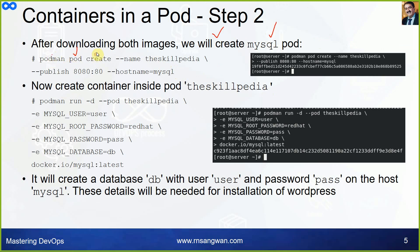After downloading both images, create a MySQL pod: `podman pod create --name the-skillpedia --publish 8080:80 --hostname mysql`. The `--publish` or `-p` flag means any request coming on port 8080 will be forwarded to port 80. The hostname is set to `mysql`. This is the pod we have created.